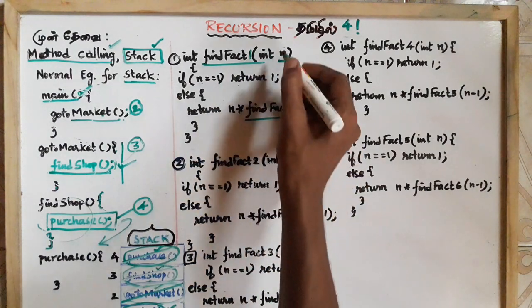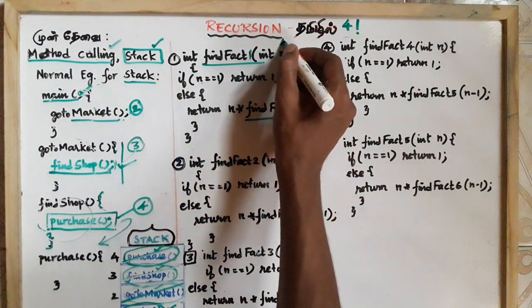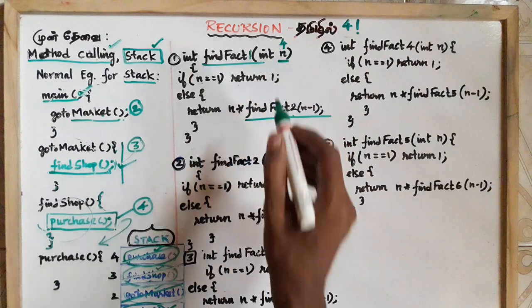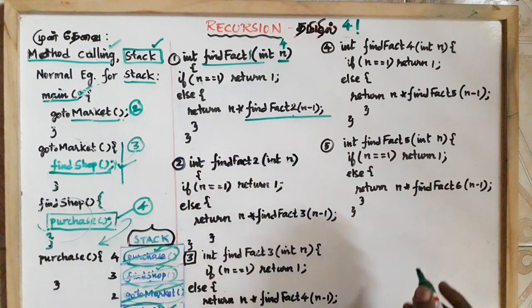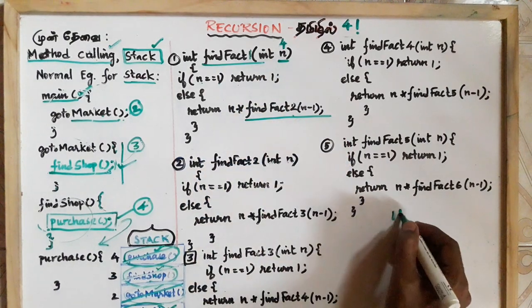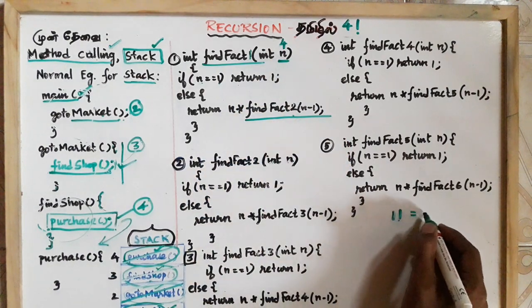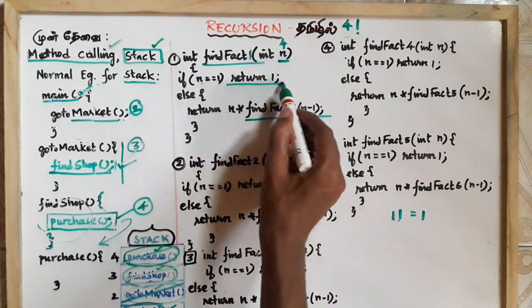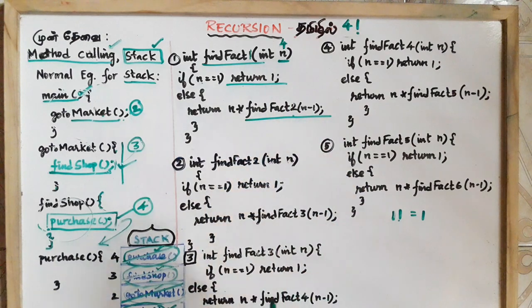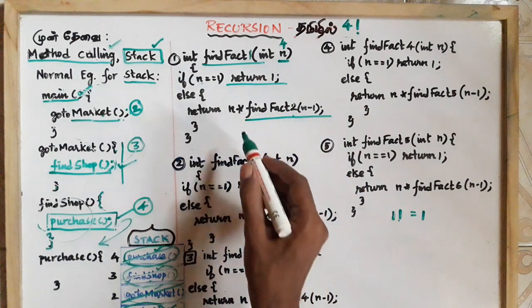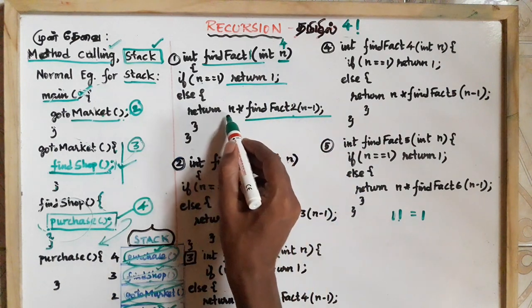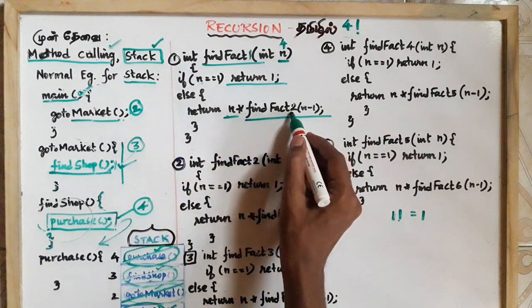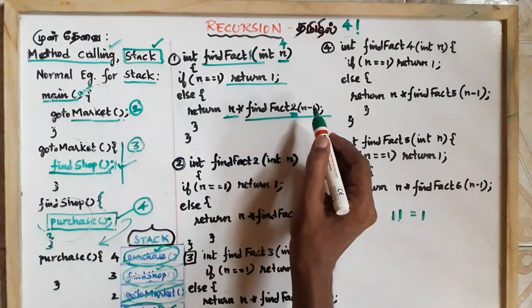In the findFact method, the value is 4. We know that if the value is 1, then 1 factorial is 1 — that is the base case, return 1. If it is not 1, we return n into findFact of n-1.